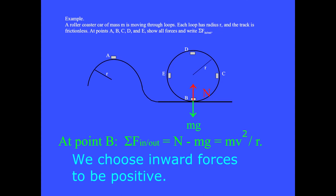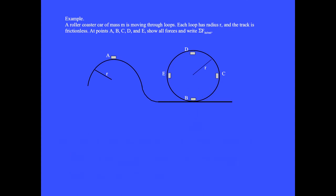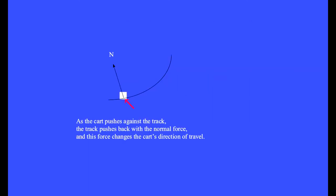At point B, the roller coaster begins moving along the circular loop. This is the same thing as when you ran along flat ground that suddenly sloped upward in a circular curve, making your knees and legs buckle a little. After point B, the cart wants to continue moving in a straight line forever, but it runs into the track. As the cart pushes against the track, the track pushes back with the normal force, and this force changes the cart's direction of travel.